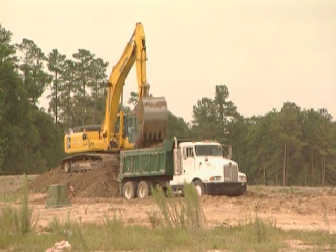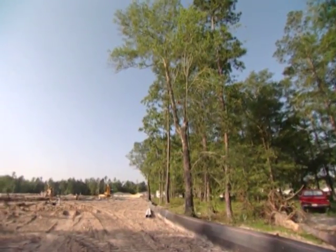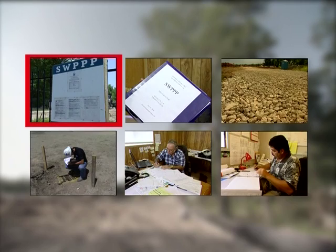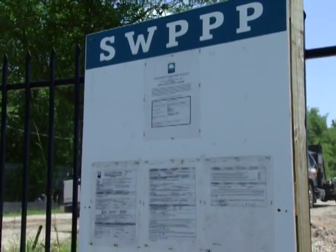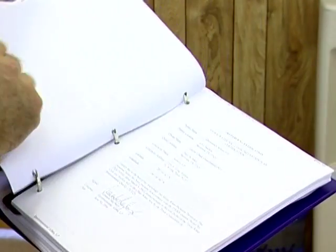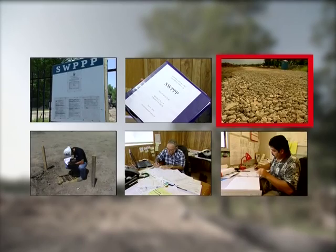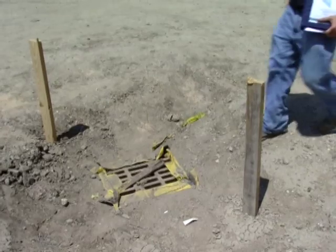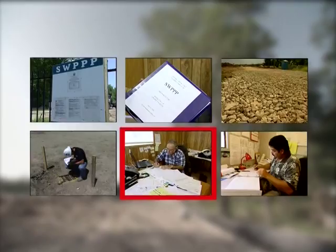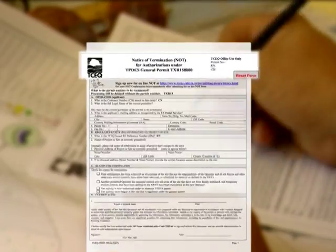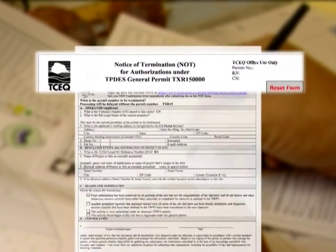That covers the basic steps for stormwater pollution prevention at construction sites. To summarize, there are six main elements for staying in compliance with stormwater regulations: 1. Get permit coverage — file your Notice of Intent and know the terms of the permit. 2. Make sure your SWIP is prepared on time and covers everything it should. 3. Install the BMPs that are called for in the SWIP. 4. Inspect and maintain the BMPs. 5. Stay on top of your inspection logs and record keeping. 6. Close your permit — file a notice of termination when you are finished.